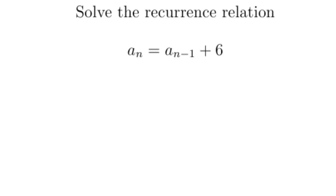So first let's solve this recurrence relation using telescoping. To use telescoping we need to rewrite the recurrence relation with all the a sub something terms on one side and everything else on the other. So we'd rewrite this as a_n minus a_{n-1} equals 6.